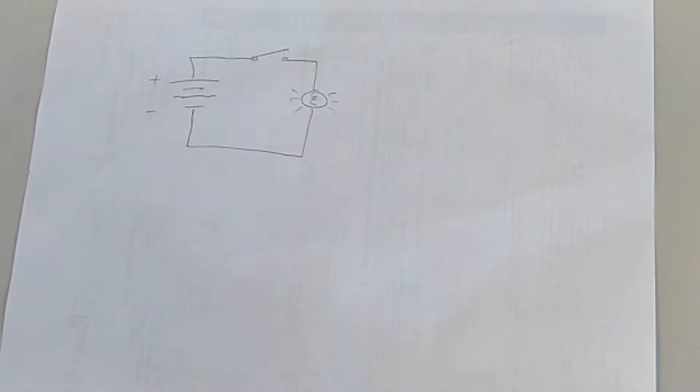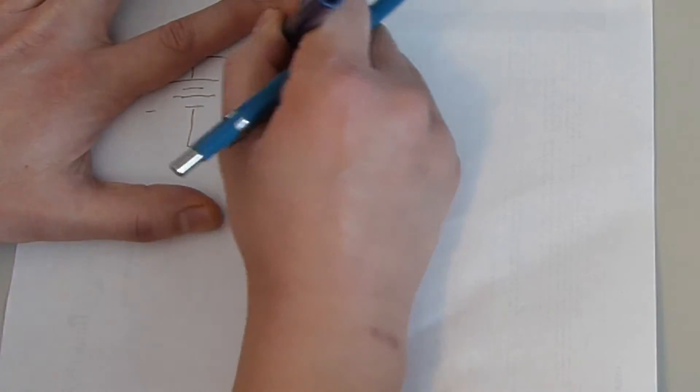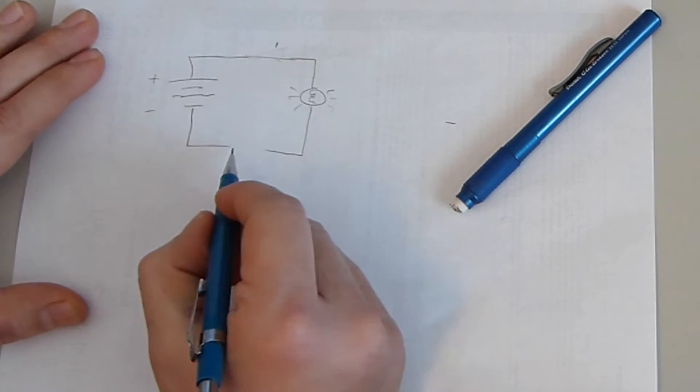So with the ground side switching, what we're going to do is we're going to move this switch right here onto the negative side, the ground side.